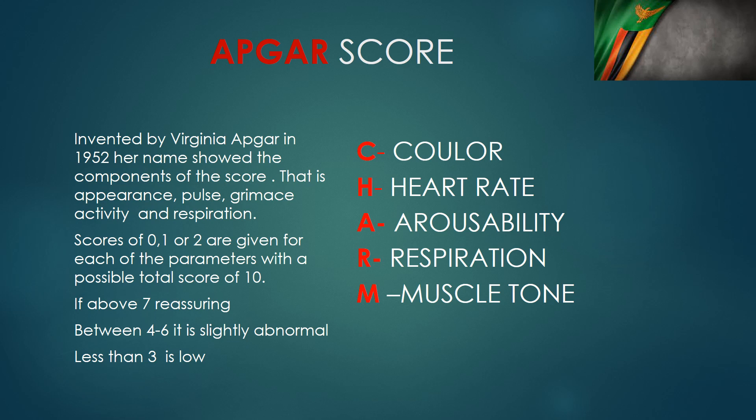Then you go to heart rate. On heart rate, all you have to remember is one hundred. If the heart rate is one hundred and above, that's a two. If it's below one hundred, that's a one. If there's no heartbeat at all, you give a zero.